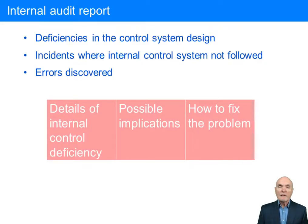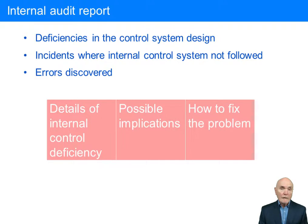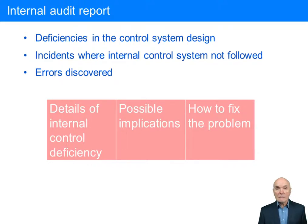After the internal auditors have completed their assignment, they will produce an internal audit report. This is normally given in three parts. First of all, it will describe the deficiencies in internal control. So it might say, for example, that invoices are not cancelled after they have been paid, or there have been incidents where employees did not cancel invoices as they should have after they had been paid. The problem might be to do with the design of the internal control system — that a control is missing.